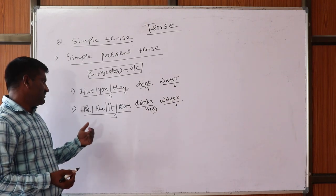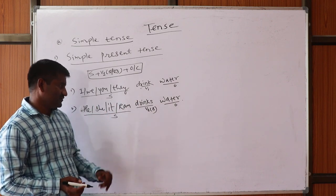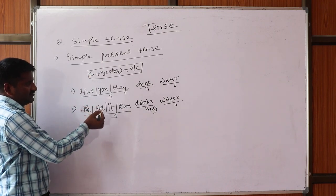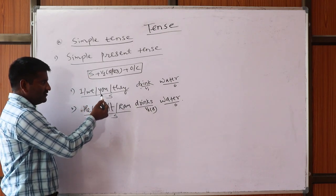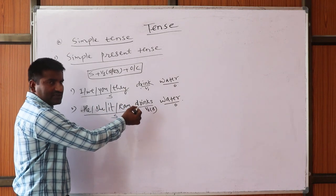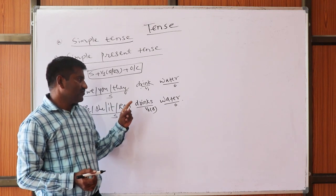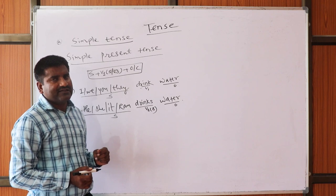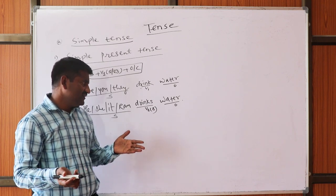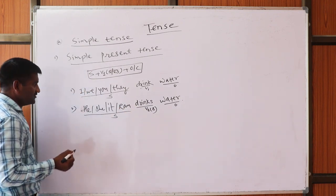So this is the structure and these are the persons. Some persons take V1, some persons take S or ES. If the last letter of the verb is E, X, or O, then it takes ES; otherwise it takes S only.